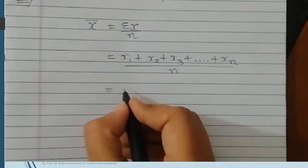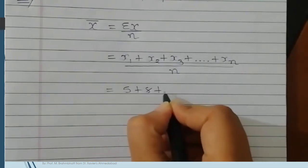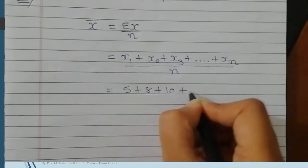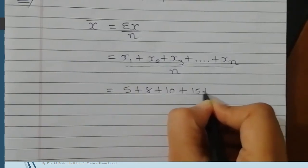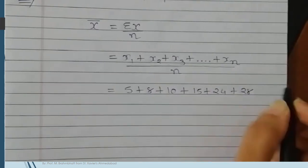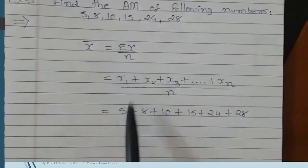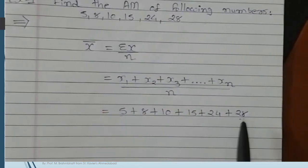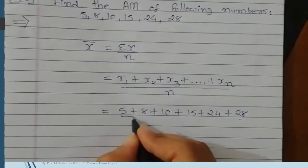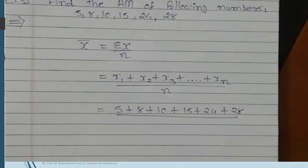So x1, let's say, 5 plus 8 plus 10 plus 15 plus 24 plus 28. These values are given in the question. You have to find the total of this x values, divided by the count of the number of observations.